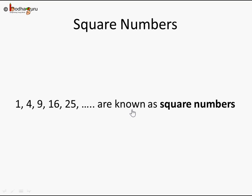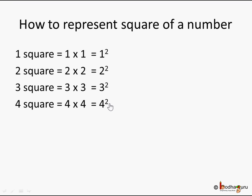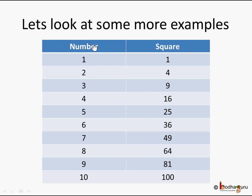A square number is the square of a number. So how do we represent the square of a number? When we say 1 squared, it really means 1 into 1. It is represented as 1 with a small 2 written at the top right corner. Same way, 2 squared means 2 multiplied by itself, 2 into 2, so we write 2 with a small 2 at the top. 3 squared means 3 multiplied by itself — 3 with a small 2 at the top. So to represent any number squared, we just write that number and put a small 2 on the top right — that power of 2 means the number is multiplied by itself.